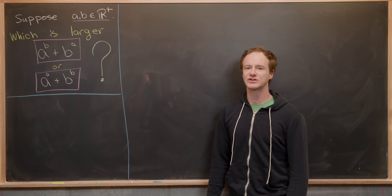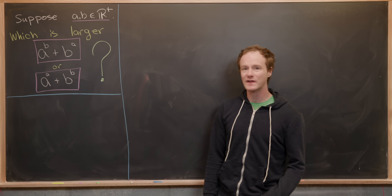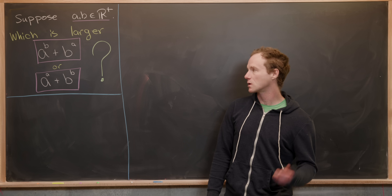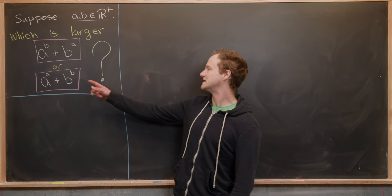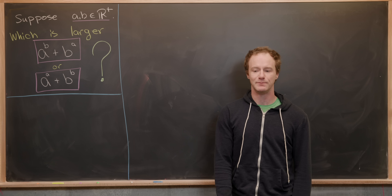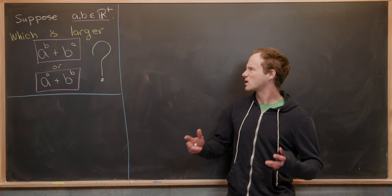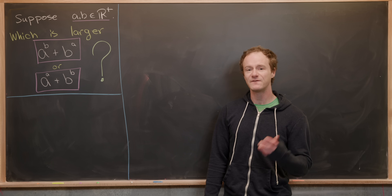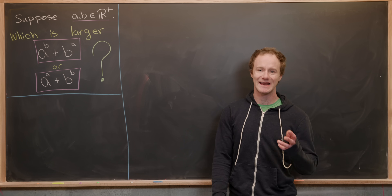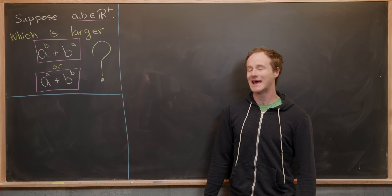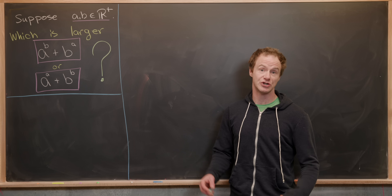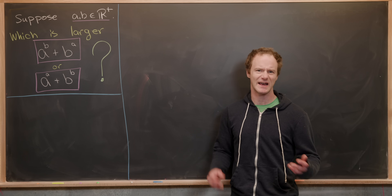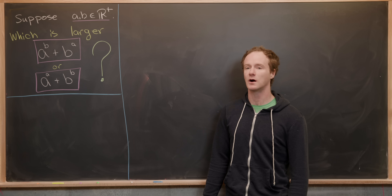Since we're asking this question in the first place, that really means one of these is always larger than the other. That's not totally true, because they could be equal if A and B were equal. So really we're talking about larger as being greater than or equal to. Since this question has an answer, we can just do a test case to get a guess, and then prove that guess using a more careful mathematical argument.